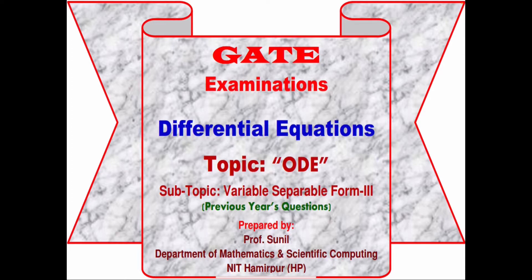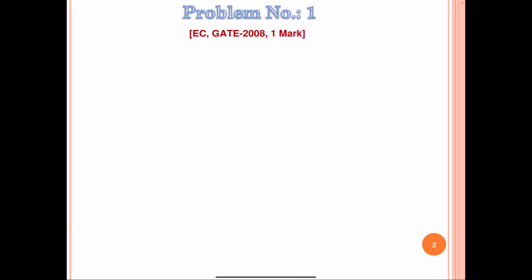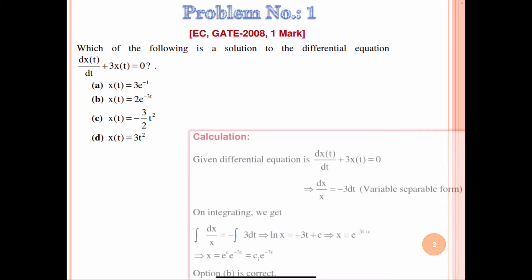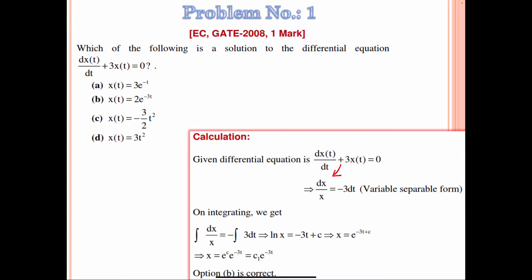Hello everyone, today we will discuss a few more problems on the variable separable form of ordinary differential equations. The first problem is from Electronics and Communication Engineering GATE 2008 examination. The statement is: which of the following is a solution to the differential equation dx/dt + 3x = 0? We have four options, and we can convert this differential equation into variable separable form.